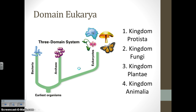So what are the kingdoms that belong to domain eukarya? There are four eukaryotic kingdoms: protists, fungi, plants, and animals — kingdom protista, kingdom fungi, kingdom plantae, and kingdom animalia.